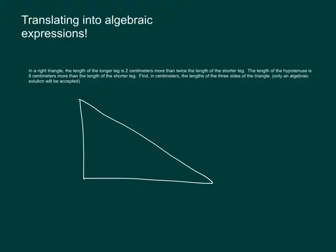The hypotenuse is 8 centimeters more than the length of the shorter leg. So notice each of these legs and the hypotenuse are given in terms of the shorter leg. So I'm going to let the shorter leg be x.